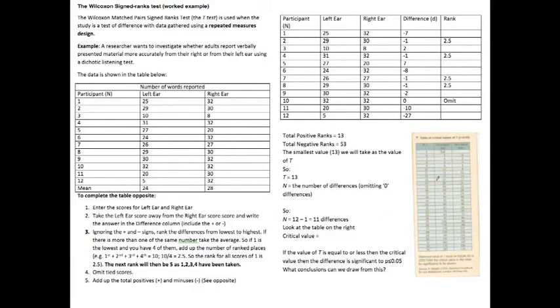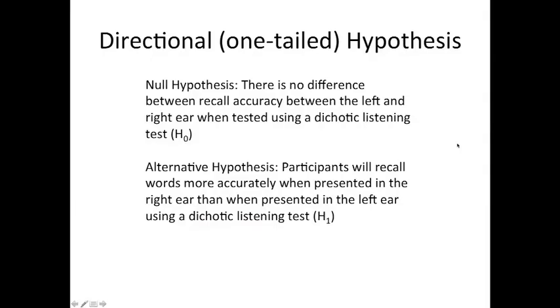Right, so let's start with some basics, shall we? This is a directional or one-tailed hypothesis. The null hypothesis is that there is no difference between recall accuracy between the left and right ear when tested using a dichotic listening test. This little symbol here, H₀, merely denotes that this is the null hypothesis. So rather than writing null hypothesis, you could simply write H₀.